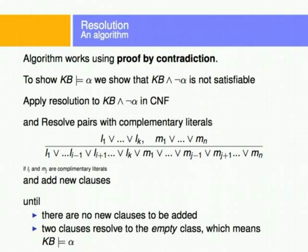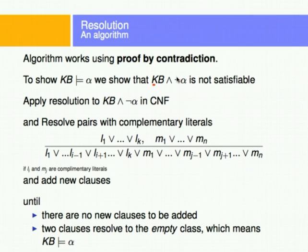We're going to cover a couple of algorithms that will use this resolution, based on proof by contradiction. One key concept is that we need to show the knowledge base entails the query. We will do that by showing that the knowledge base AND the negation of the query is not satisfiable. If you add the opposite of the query to the knowledge base and that is not satisfiable, then the query is actually true. We apply resolution to all the rules of the knowledge base plus the negation of the query in conjunctive normal form, and resolve the query. That's going to be the topic of the next video.